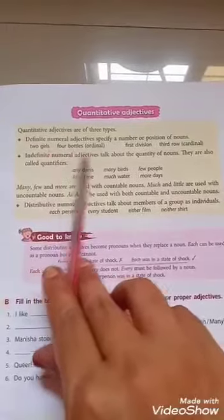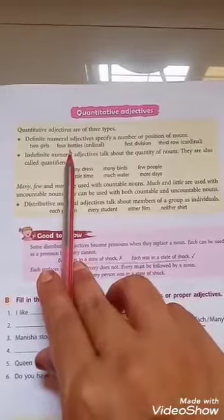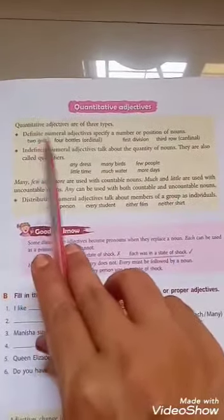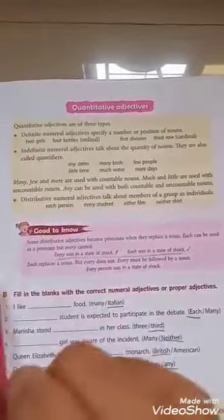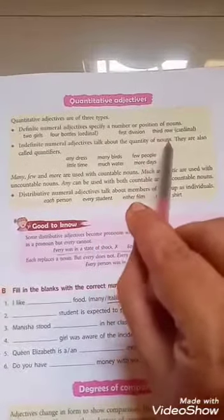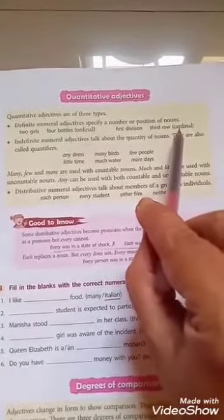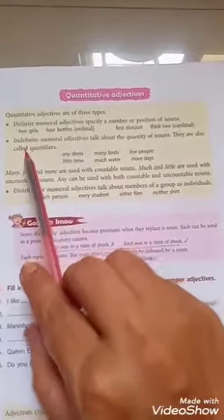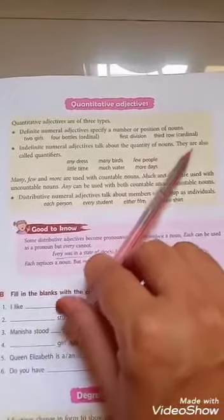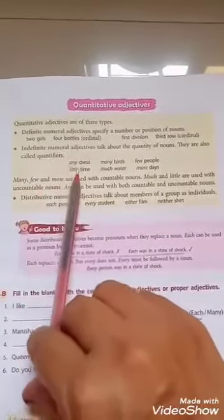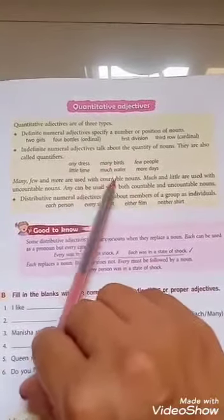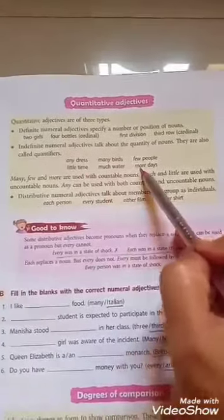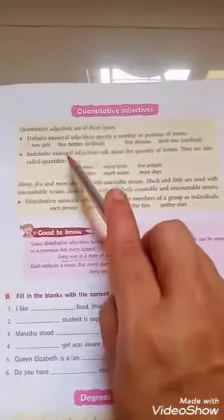Two girls, four bottles — ordinal means exactly four bottles are there. First division and third row — this is cardinal. If we use four or two, it means an exact number, so it is ordinal. If we use first, second, third, tenth, eleventh, it is cardinal. Indefinite numeral adjectives talk about the quantity of nouns; they are also called quantifiers: any dress, many birds, few people, little time, much water, more days. These words — any, many, few, little, much, more — are indefinite numeral adjectives.